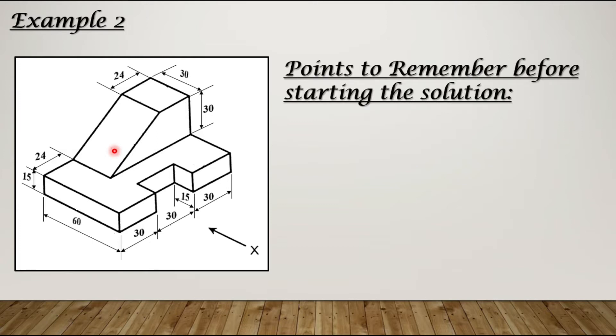There are some basic points to be remembered before starting the solution. First, the arrow with label X indicates the front view direction. So this is the label X and this is the arrow we are talking about. So this is our front view direction.